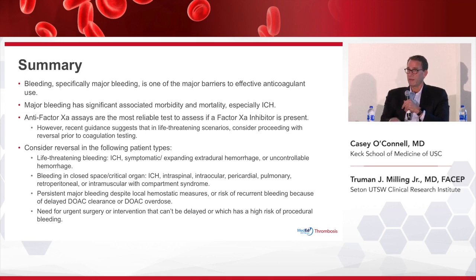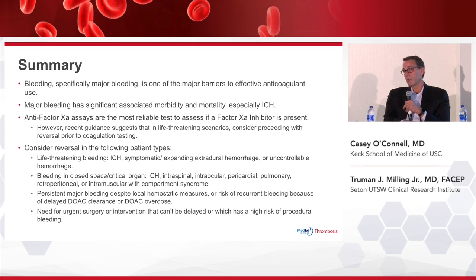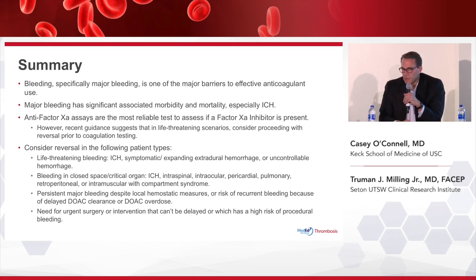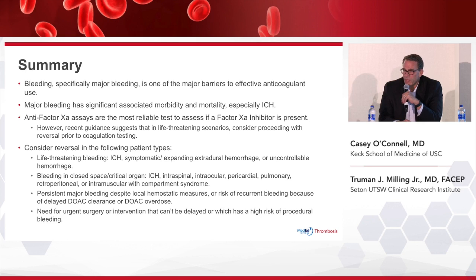Major bleeding, once it happens, is fairly rare, and appears even rarer — at least the most devastating kind — with these newer drugs. It carries high mortality once you have it. You may be less likely to get ICH with DOACs, but once you get it, your mortality is still close to 50%. Anti-Xa assays are the most reliable way to assess anticoagulant activity in factor Xa inhibitors, but they're not readily available at the bedside. There's a lot of work going on to get these tests to the bedside, but we're not there yet, so we have to use time as a surrogate.